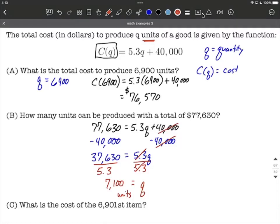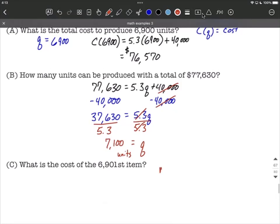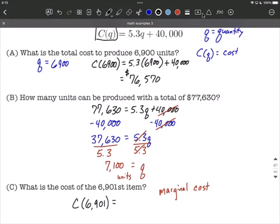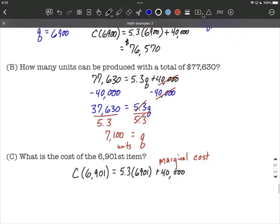The last thing we want to answer is what's the cost of the 6,901st item. The value for that next item is sometimes referred to as marginal, in this case, cost. To calculate this, I'm going to calculate the cost for the 6,901st item. That's a value for Q, so we'll replace it into the original function: 5.3 times 6,901 plus 40,000. The calculator says that's 76,575.3 dollars. That's the total cost for producing 6,901 items.